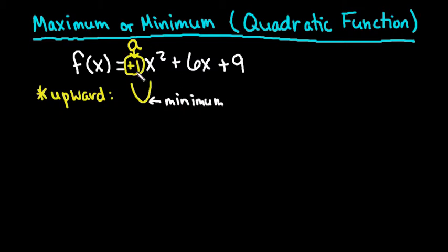Any time that you have a positive a term, or the value in front of your x squared is positive, you will have a minimum point.